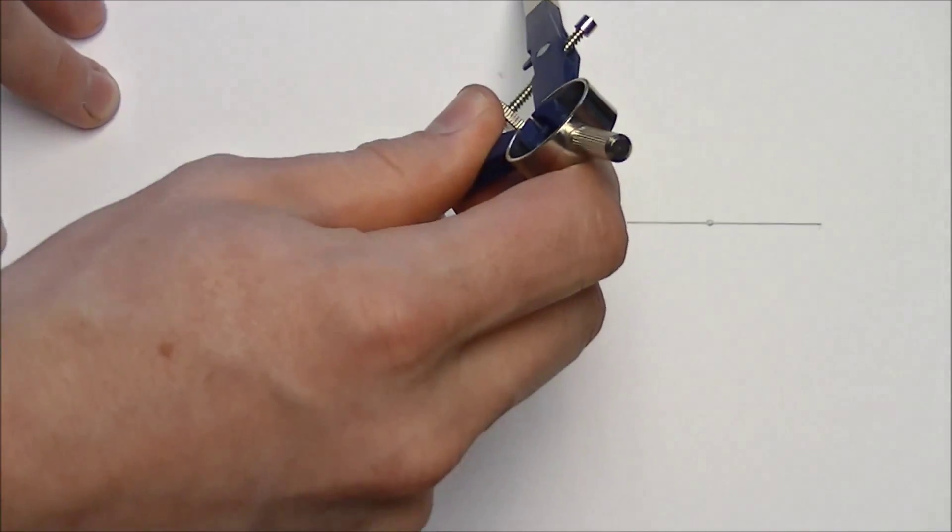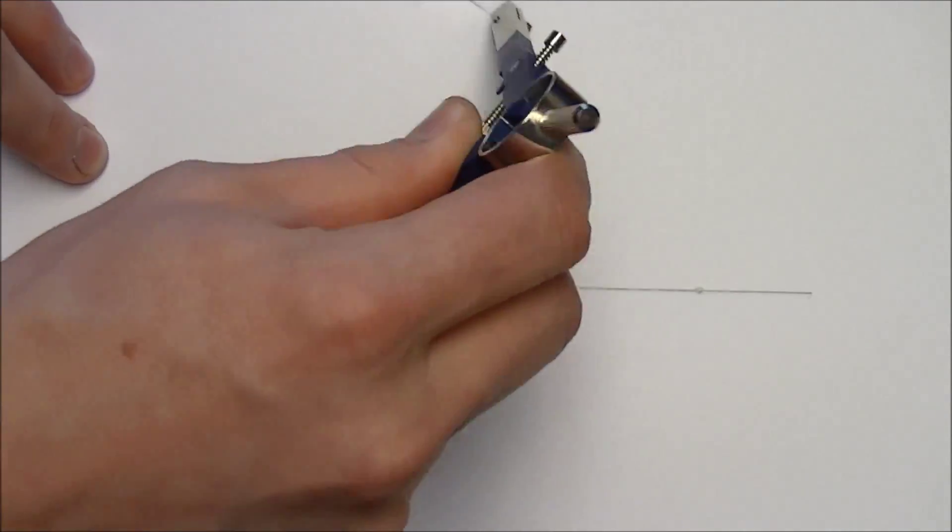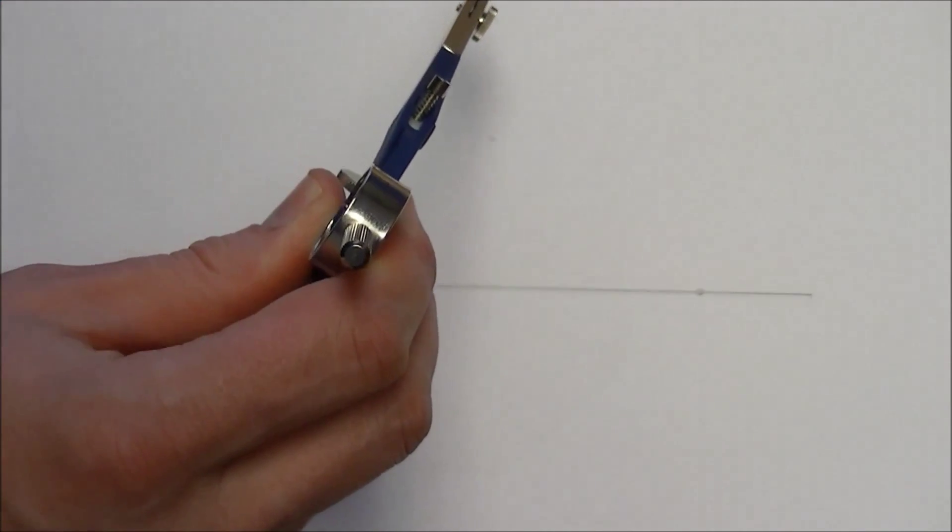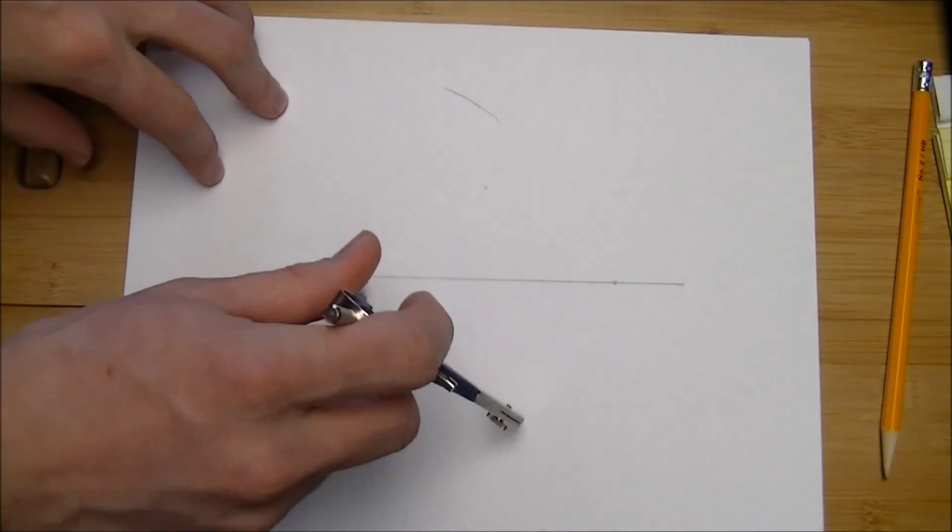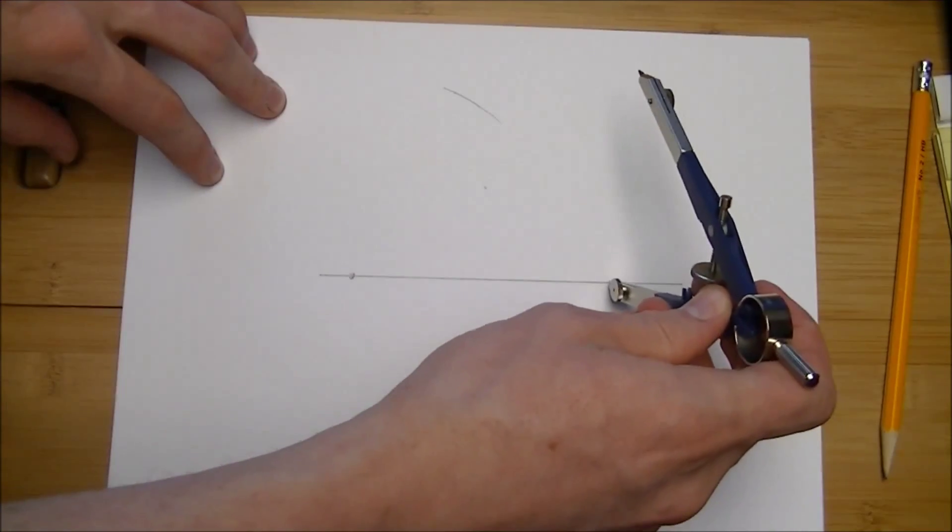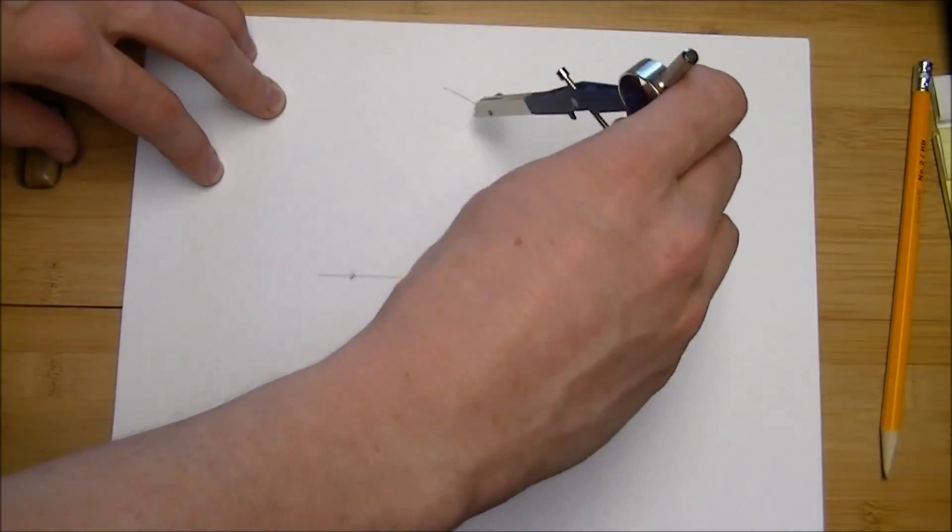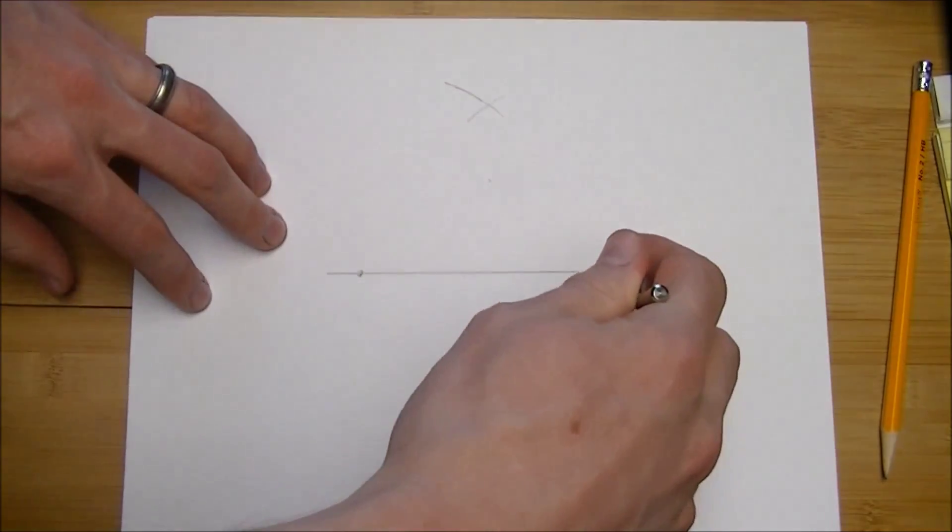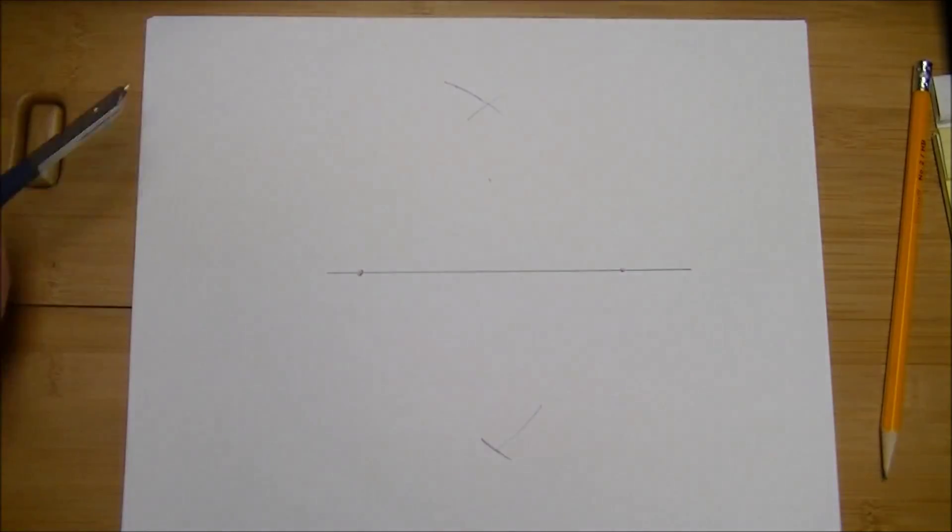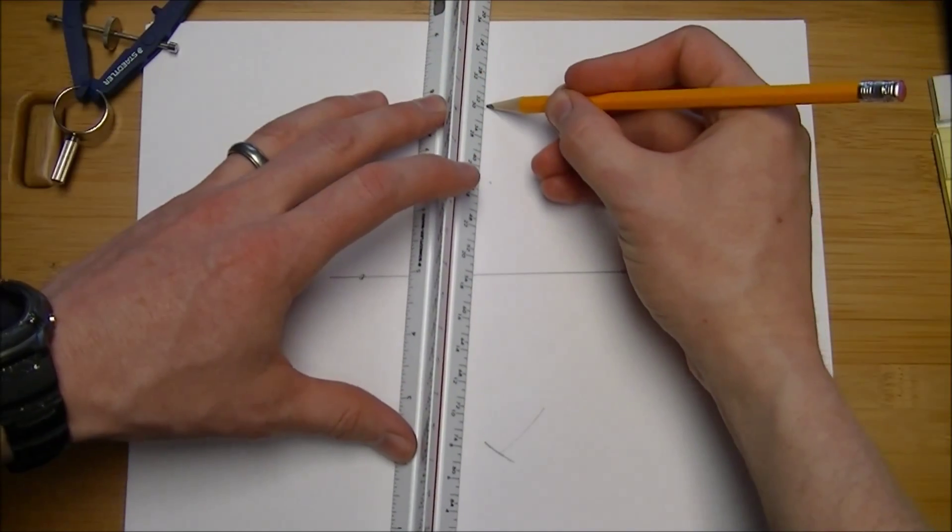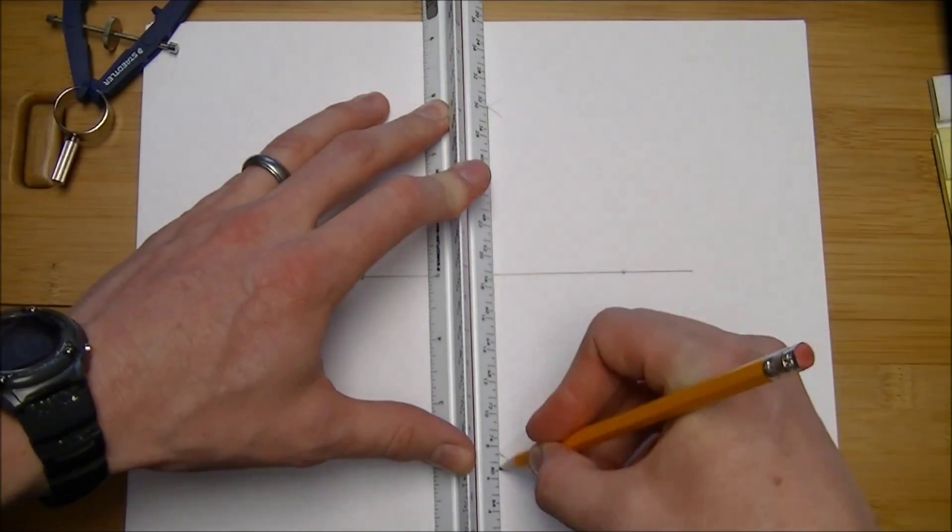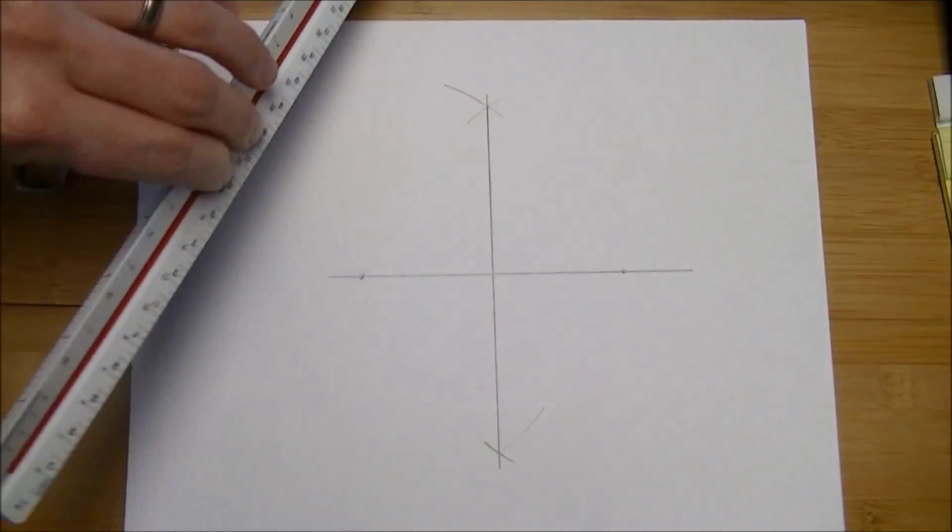Go ahead and mark kind of up here, back up a bit. I'm going to mark up there, down here, do the same thing there. This gives me a perpendicular.